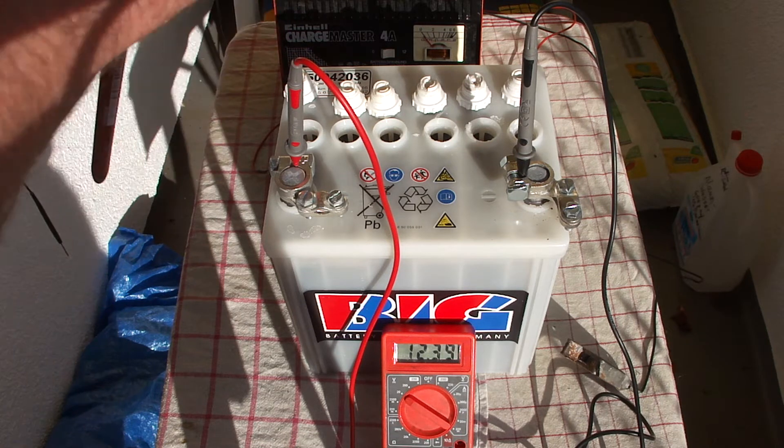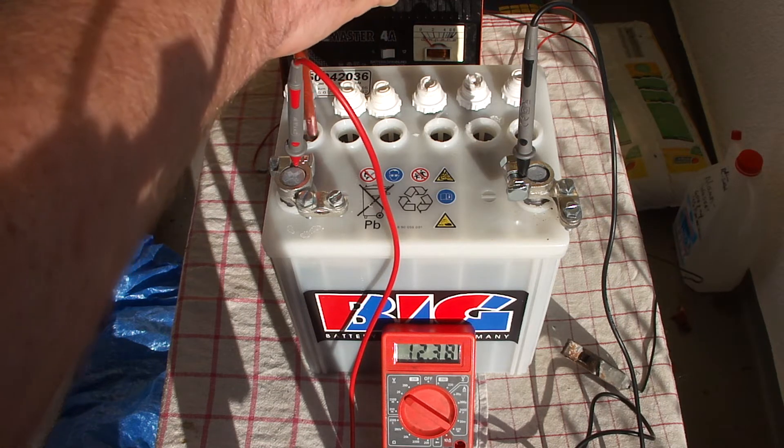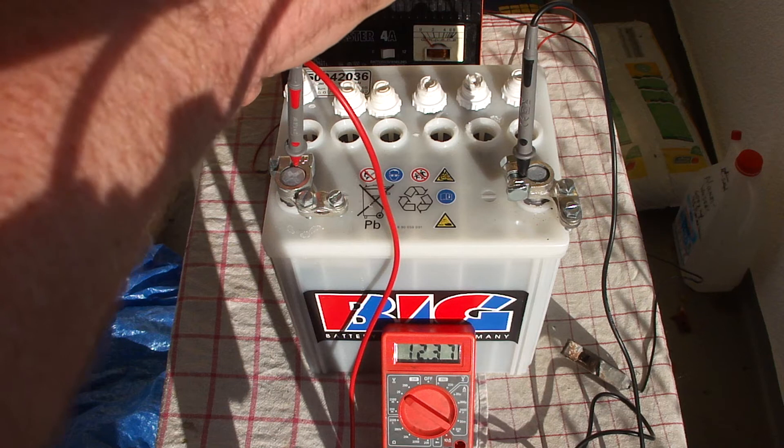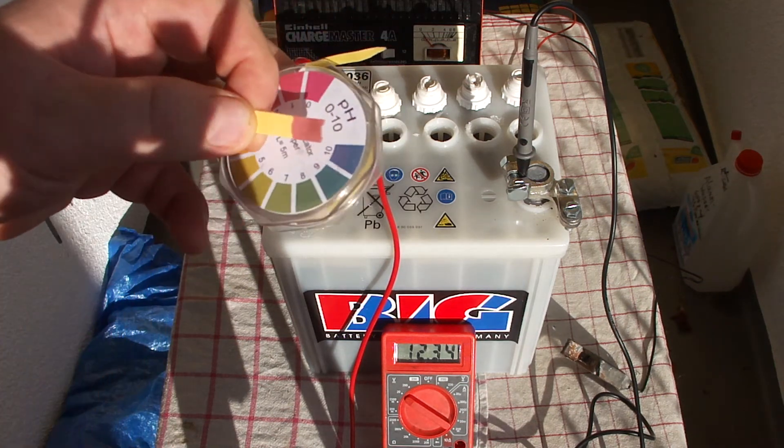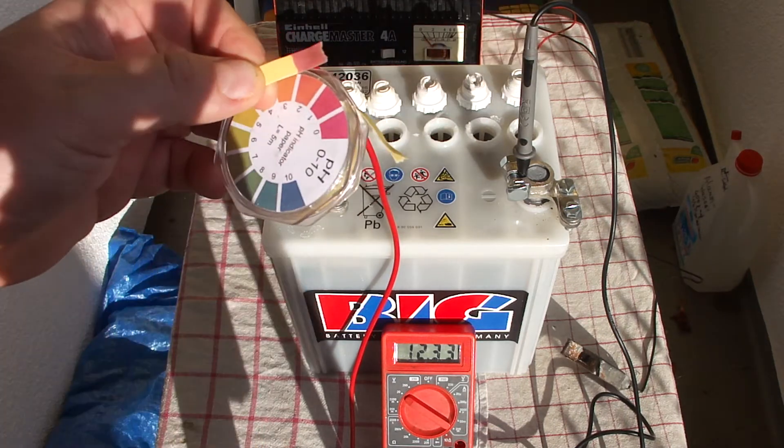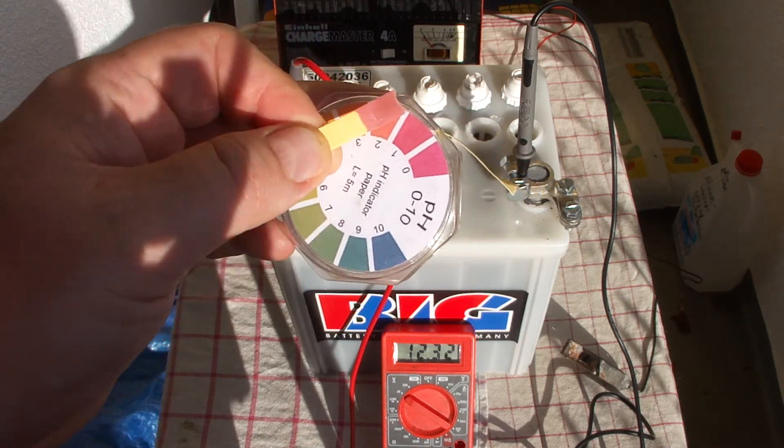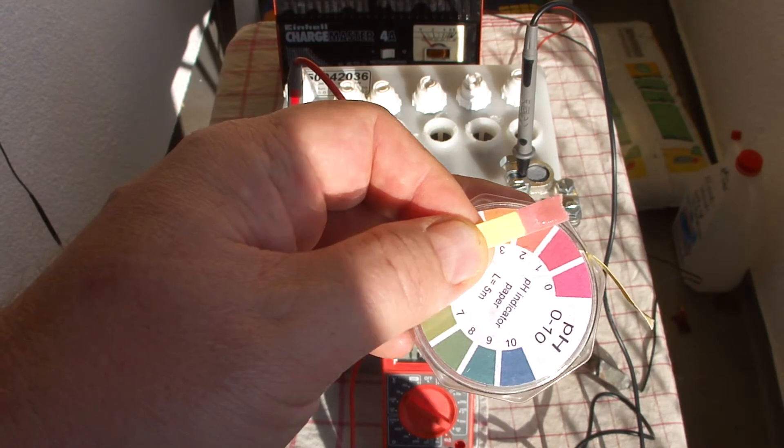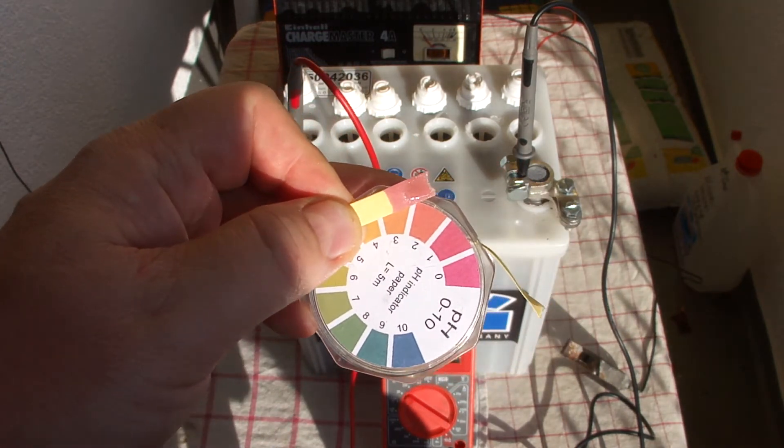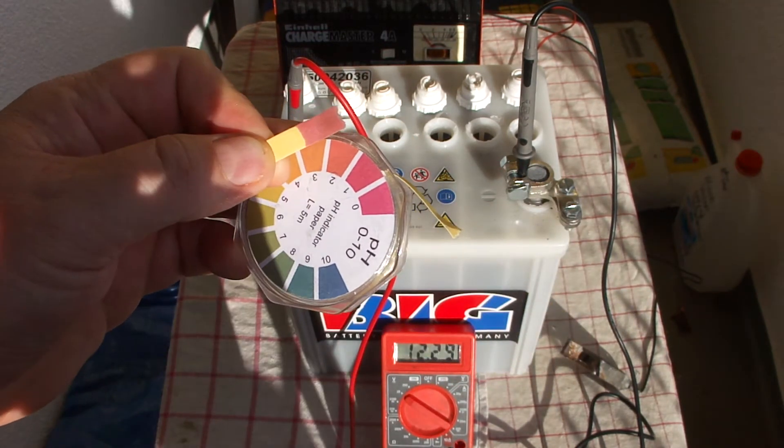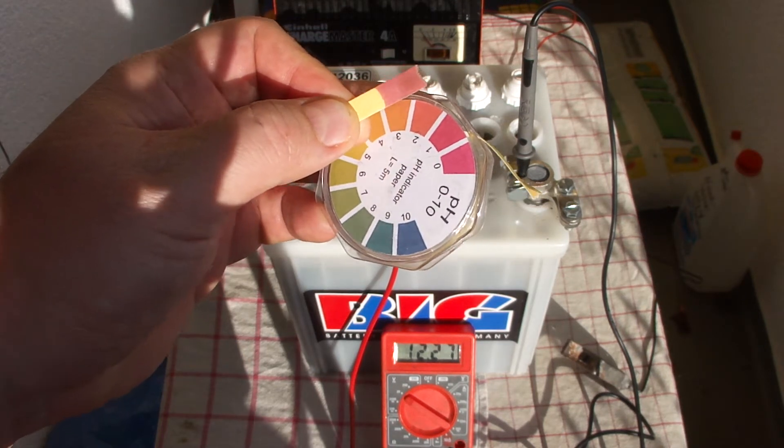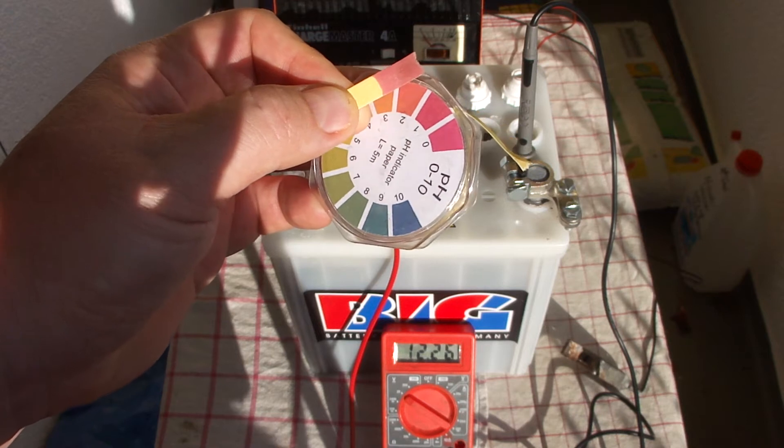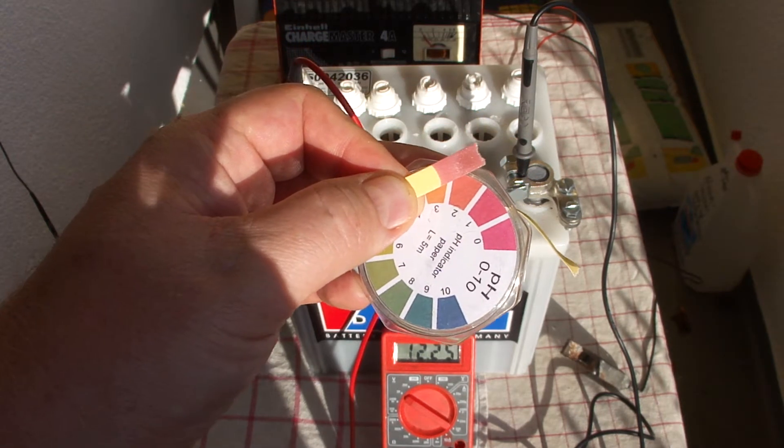Let's just pull up this electrolyte. As you can see now, it's around pH level 2, so it's pretty acidic now.